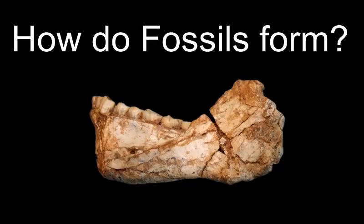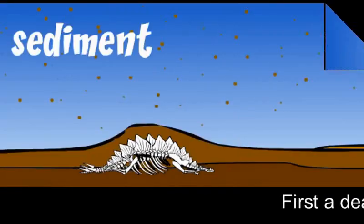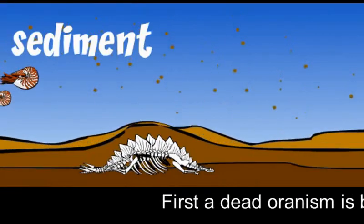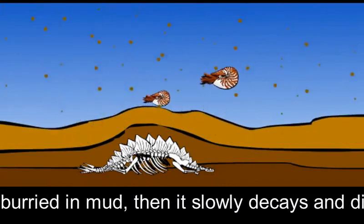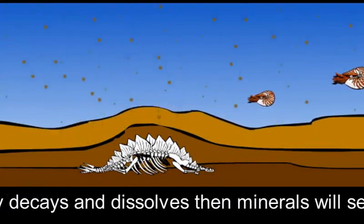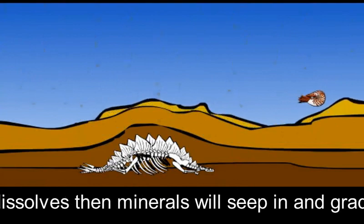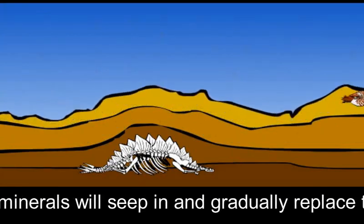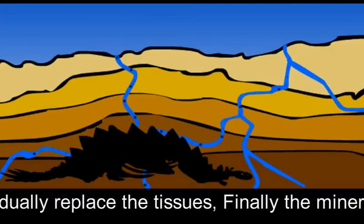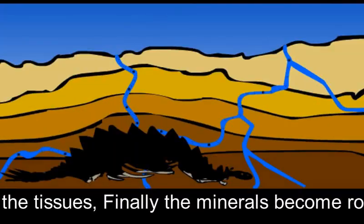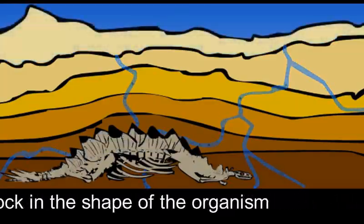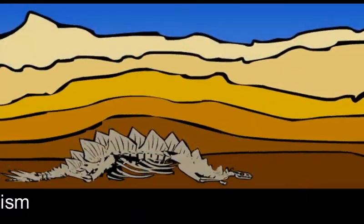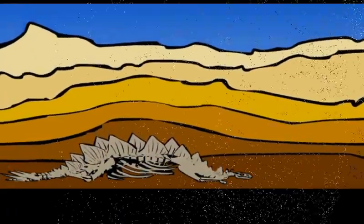How do fossils form? First, a dead organism is buried in mud, then it slowly decays and dissolves. The minerals will seep in and gradually replace the tissues. Finally, the minerals become rock in the shape of the organism.